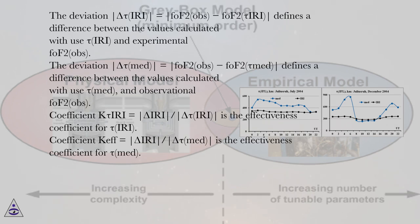The deviation delta tau IRI equals vertical bar FOF2 OBS minus FOF2 tau IRI defines a difference between the values calculated with use tau IRI and experimental FOF2 OBS.